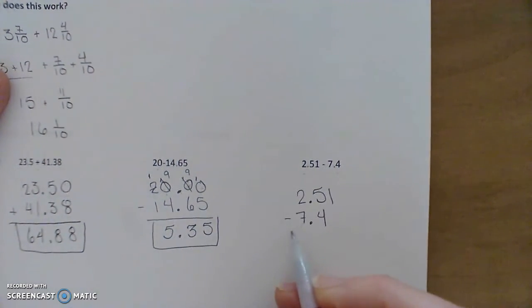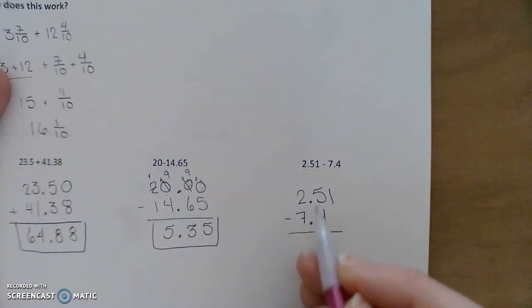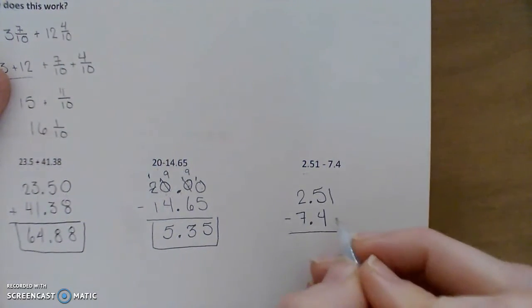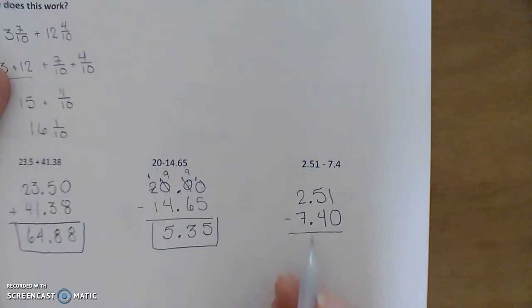Okay. So the first thing that I'll do is line up my decimal points so that my ones place tenths and hundredths. Maybe I'll add a zero placeholder here.